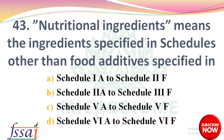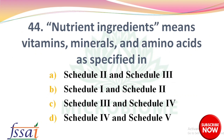Next question: nutritional ingredients means the ingredients specified in schedules other than food additives specified in — options: Schedule 1A to 2F, Schedule 2A to 3F, Schedule 5A to 5F, Schedule 6A to 6F. The right answer is option C, Schedule 5A to 5F. Next, vitamins, minerals, and amino acids are specified in — options: Schedule 2 and 3F, Schedule 1 and 2F, Schedule 3 and 4F, Schedule 4 and 5F. The right answer is option B, Schedule 1 and Schedule 2F.